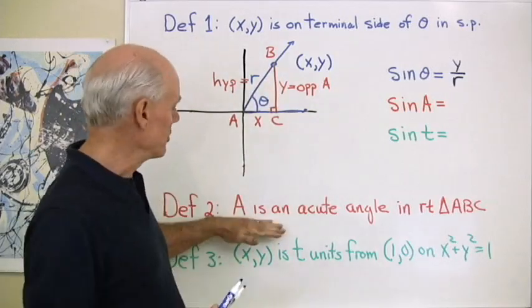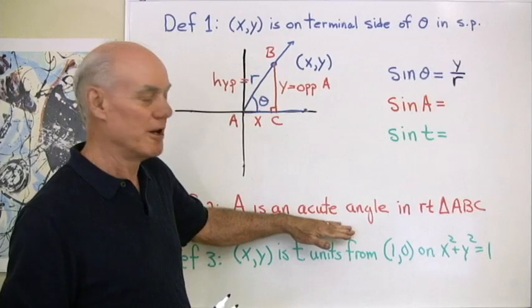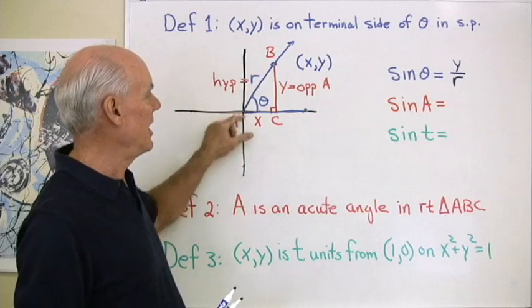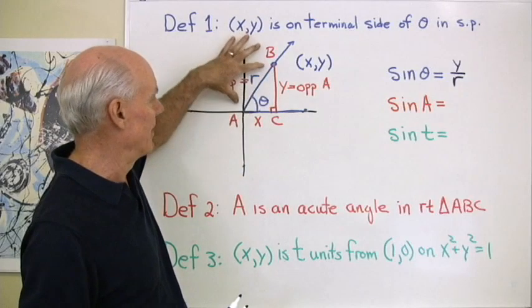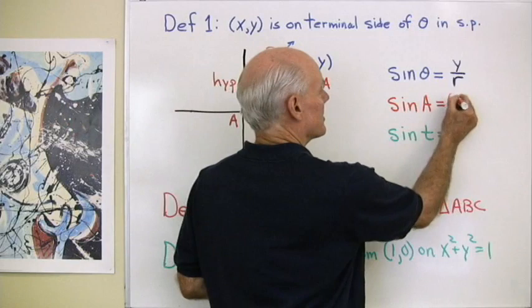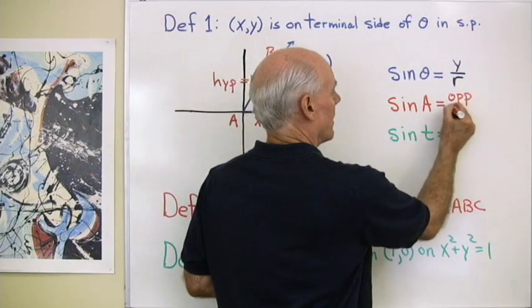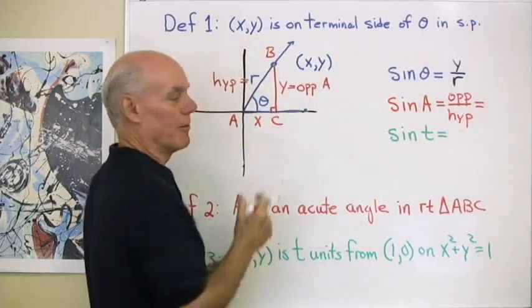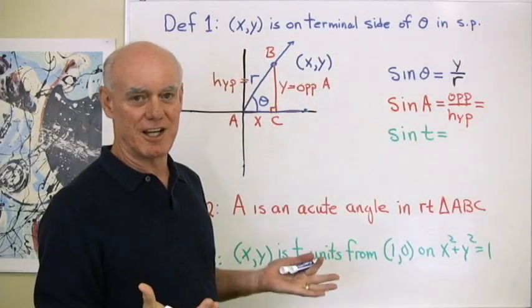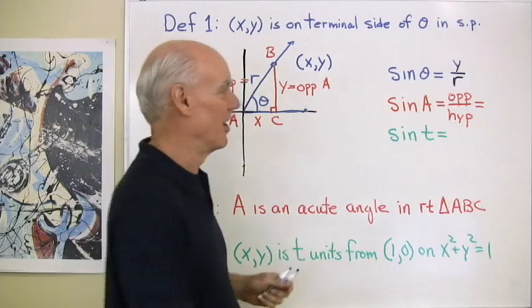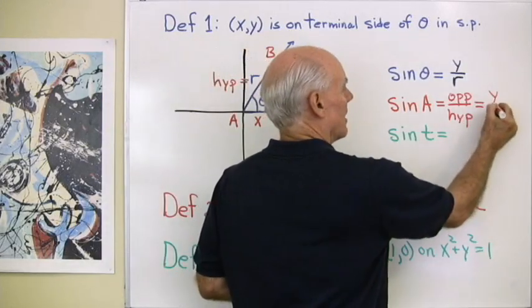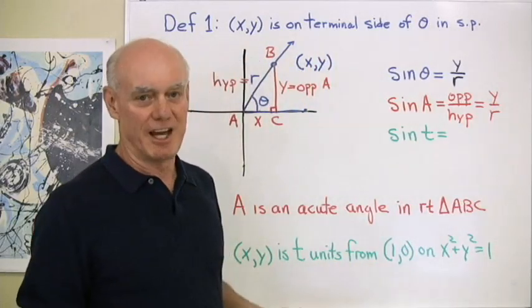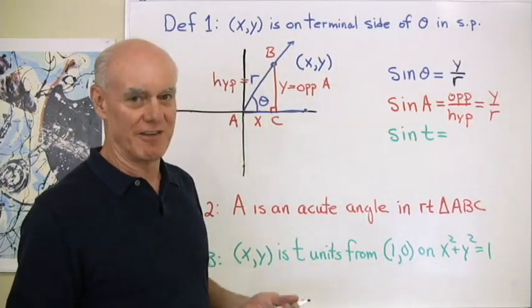So according to my definition when A is an acute angle in a right triangle ABC where C is the right angle, then the definition for sine A is the side opposite A divided by the hypotenuse. So I'll write that down, the side opposite divided by the hypotenuse. And when I look in my diagram right here, I see that the side opposite A is Y and the hypotenuse is R. So this again is Y over R. So I get the same exact value for the sine of angle A as I did for the sine of angle theta.